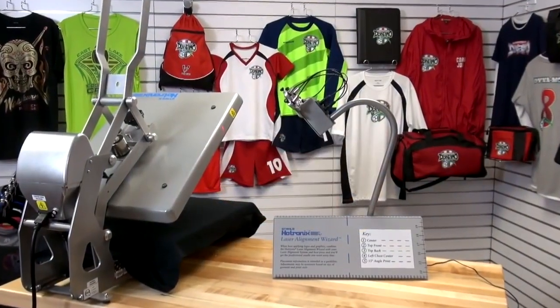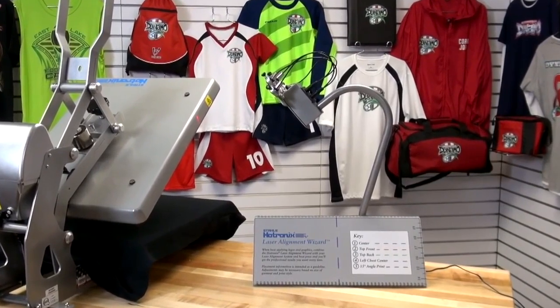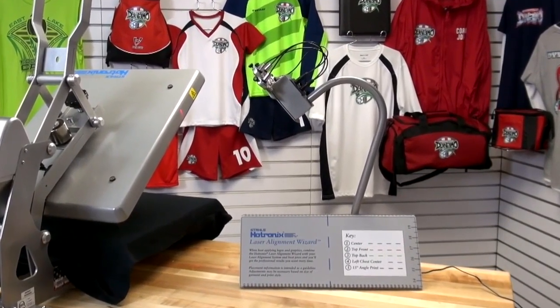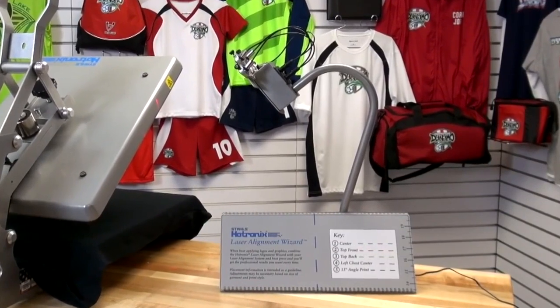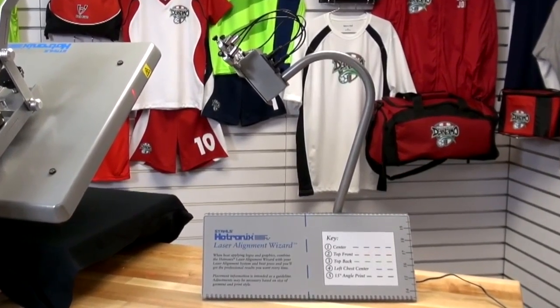Increase your production speed with the heat press laser alignment system by Stahls Hotronix. The system includes four independently positionable lights and the laser alignment wizard, which is a sturdy spiral bound template to help position the bulbs for initial setup for heat application.